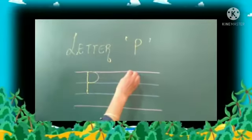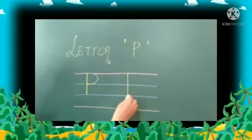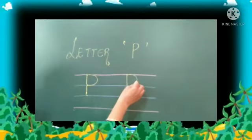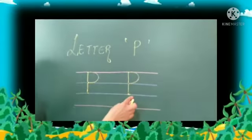Let's write once again. First make a standing line, then make a curve. This makes letter P.